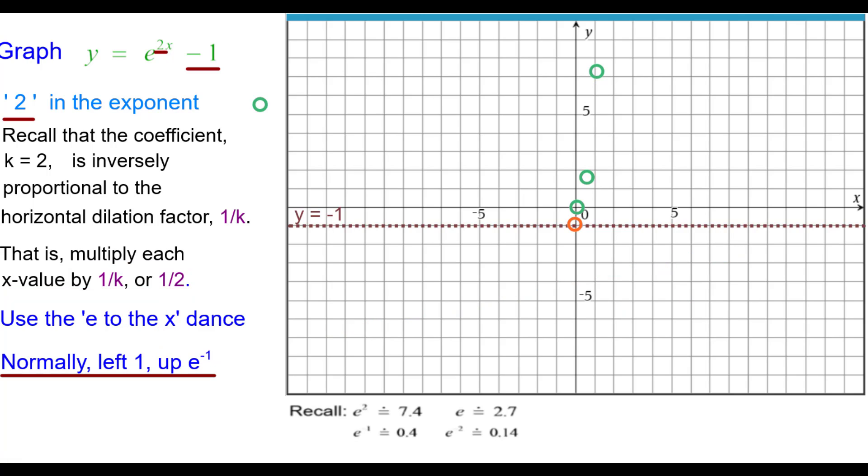In the other direction to the left, left 1 up e to the negative 1, which is about 0.4. But in this case, we're going to go left half up 0.4 because of that half factor there. And then left 2 up e to the negative 2 becomes left 1 up e to the negative 2, which is about 0.14.